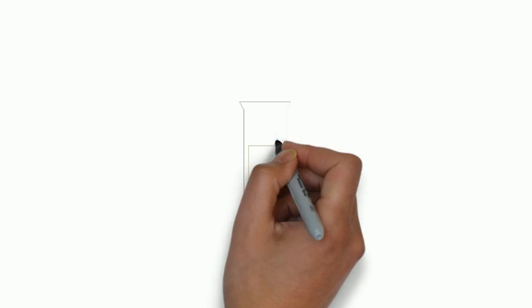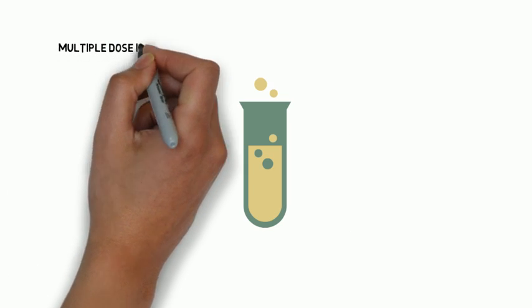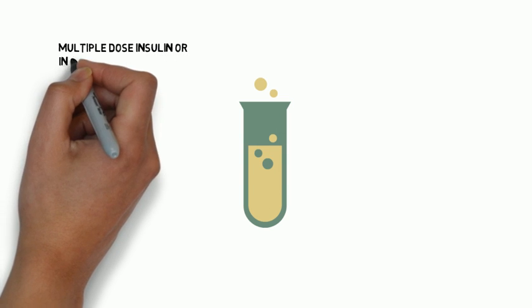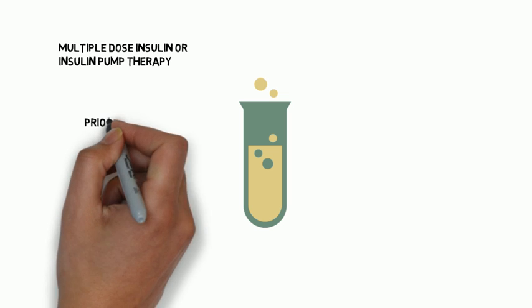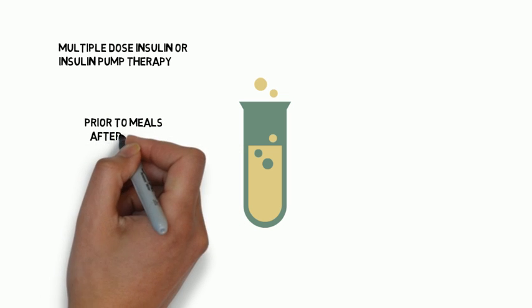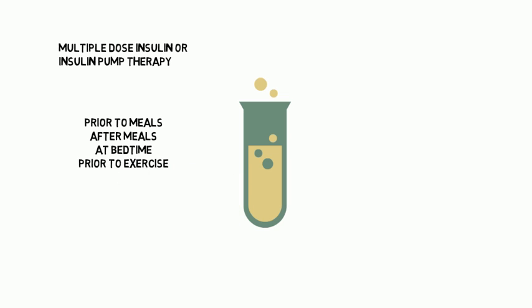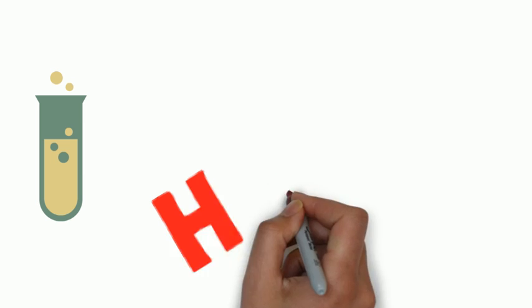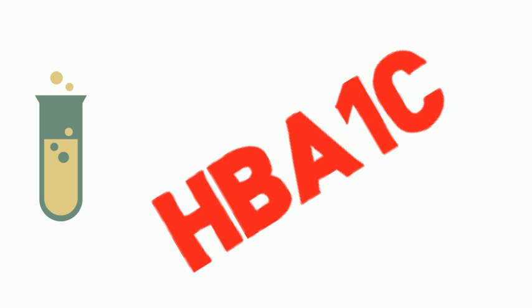Glucose monitoring can be tricky. Patients on multiple-dose insulin or insulin pump therapy should check their glucose prior to meals, occasionally after meals, at bedtime, prior to exercise, and more frequently if they suspect low or high glucose. Hemoglobin A1c in patients who are stable can be checked twice a year, while patients not meeting their goals should be checked every 3 months.